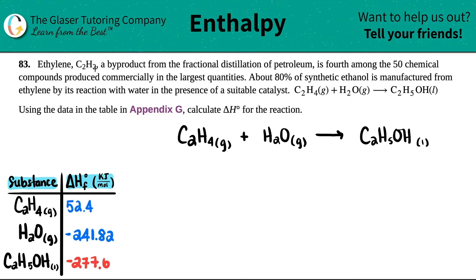Now, I already went to appendix G and wrote down all of the values that I see in this example. They just wanted you to go back in the textbook to find out these values. They're looking for a delta H, so we only care about the delta H values. So for C2H4, it was 52.4. For H2O, it's a negative 241.82. And then for the C2H5OH, it's a negative 277.6.